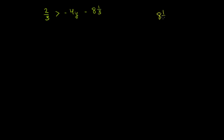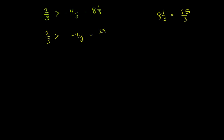So 8 and 1/3 is equal to — the denominator is going to be 3, 3 times 8 is 24, plus 1 is 25 — so this is the same thing as 25 over 3. Let me rewrite the whole thing: 2/3 is greater than negative 4y minus 25 over 3.